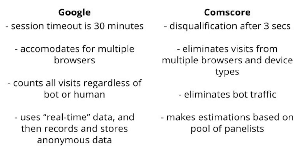For multiple browsers, Comscore eliminates visits from multiple browsers or screens. Regarding non-human traffic, Comscore eliminates bot traffic, whereas Google Analytics counts all visits regardless.